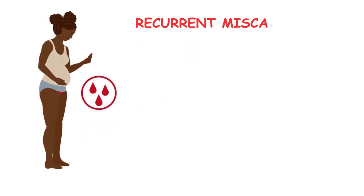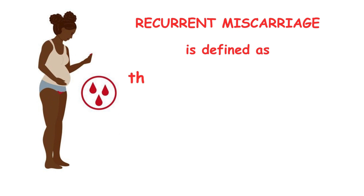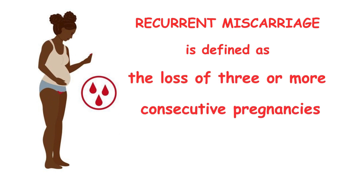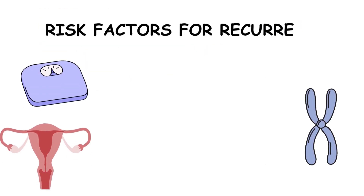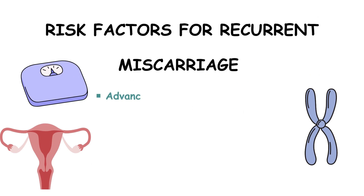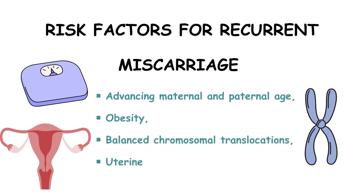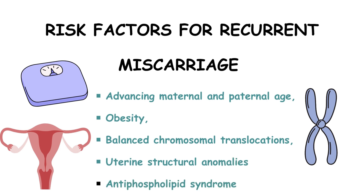Recurrent miscarriage is defined as the loss of three or more consecutive pregnancies. It affects only 1%. Several risk factors contribute to recurrent miscarriage, including advancing maternal and paternal age, obesity, balanced chromosomal translocations, uterine structural anomalies, and the presence of antiphospholipid syndrome.